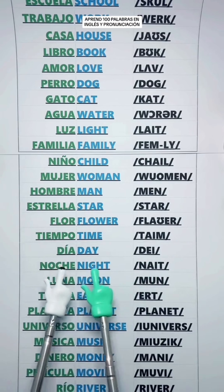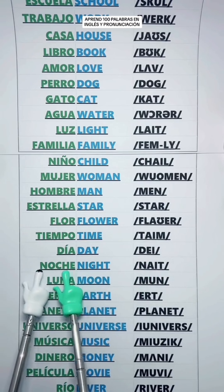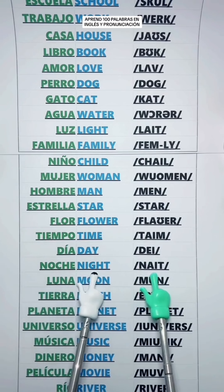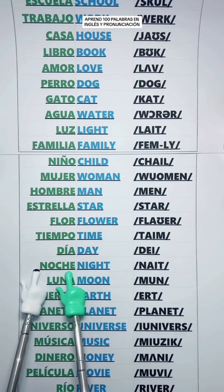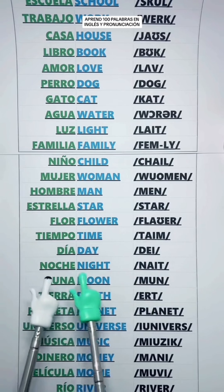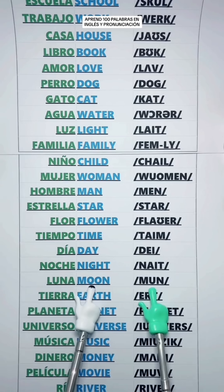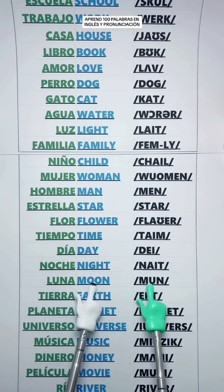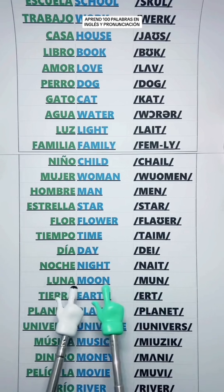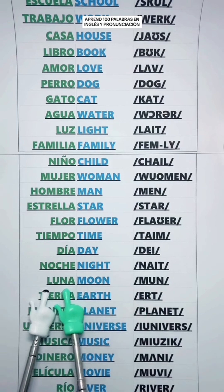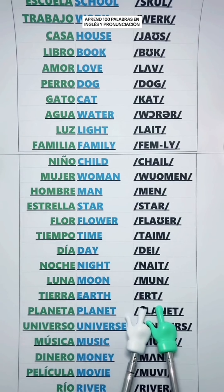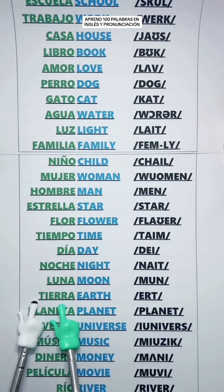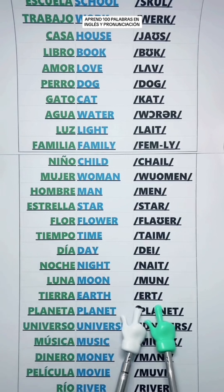Night — Noche. Moon — Luna. Earth — Tierra.